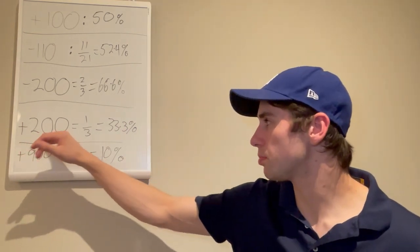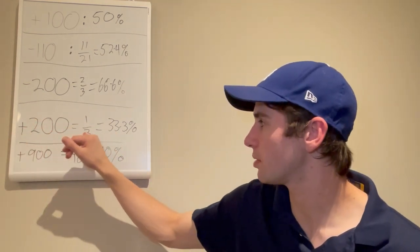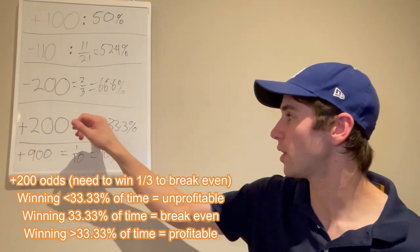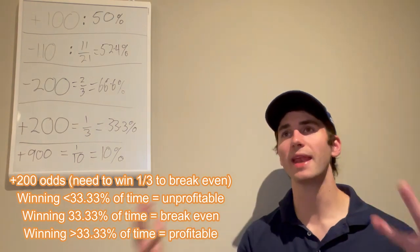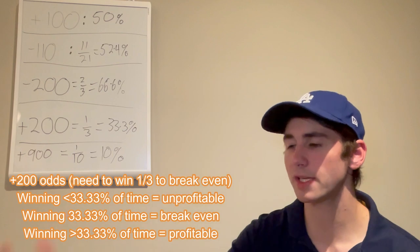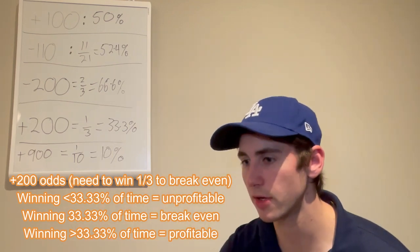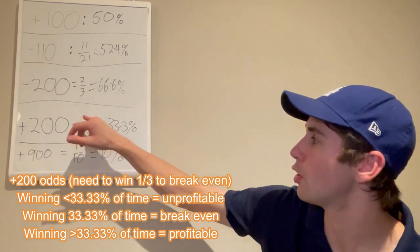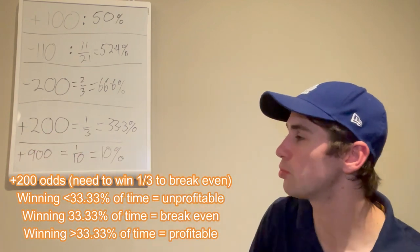Next, we can go to plus 200. At plus 200, you have to win one out of three times. At plus 300, you'd only have to win one out of four times. It makes sense — if you're betting something at plus 200 and you lost, you'd lose $100, lose $100, and then profit $200 on the win. So you only need to win one out of three times when betting plus 200 to break even.